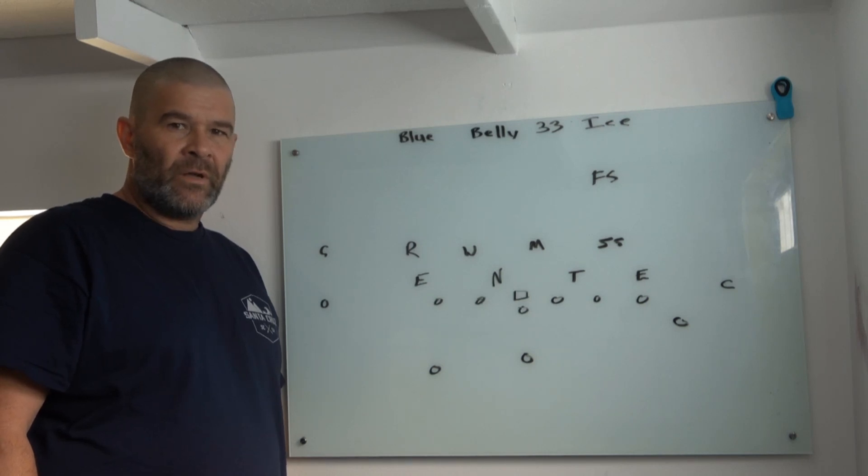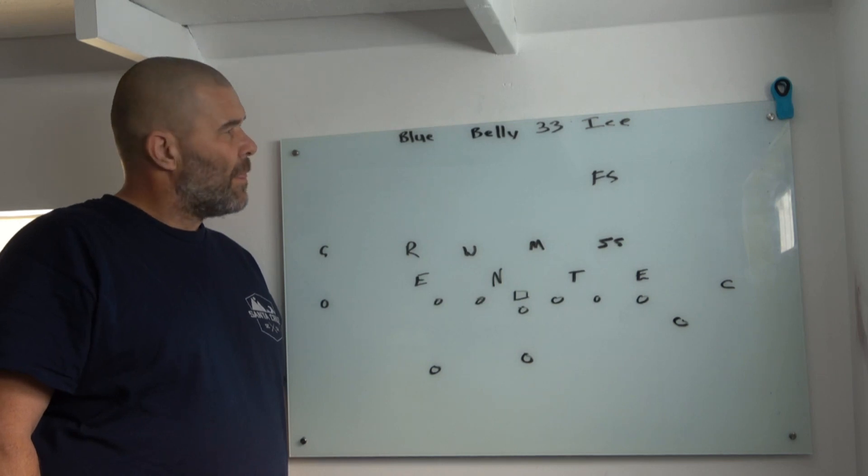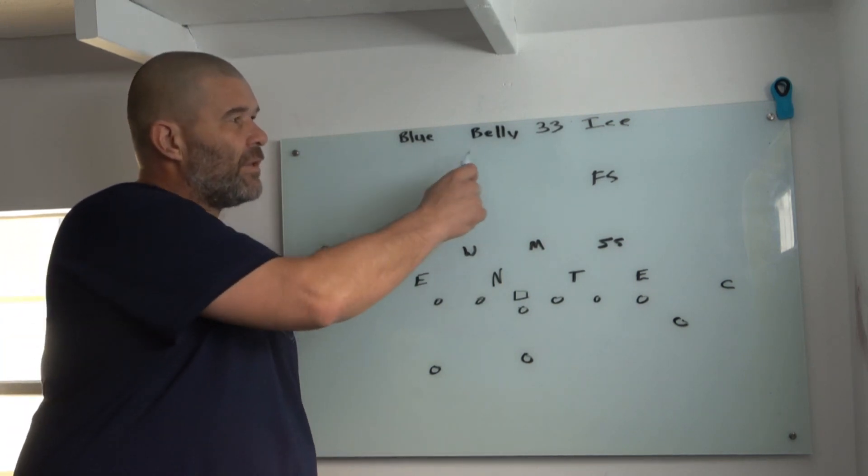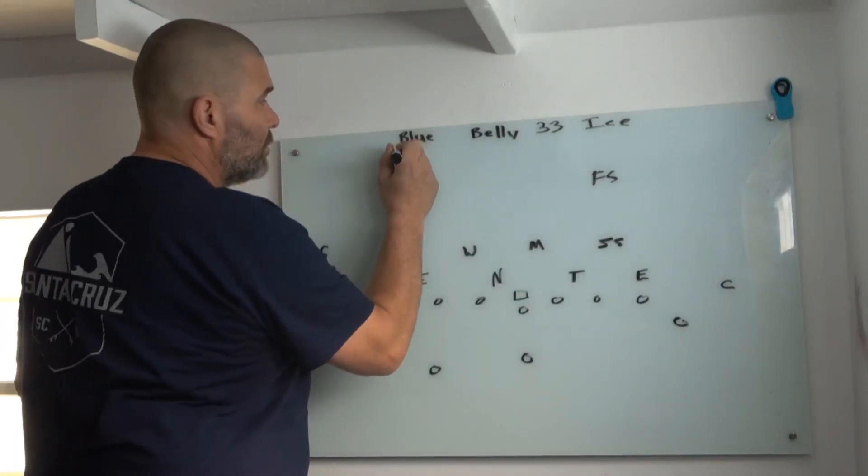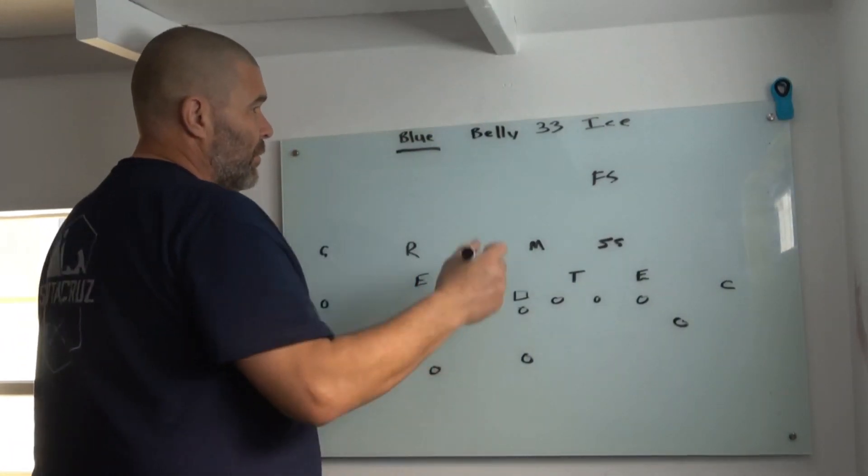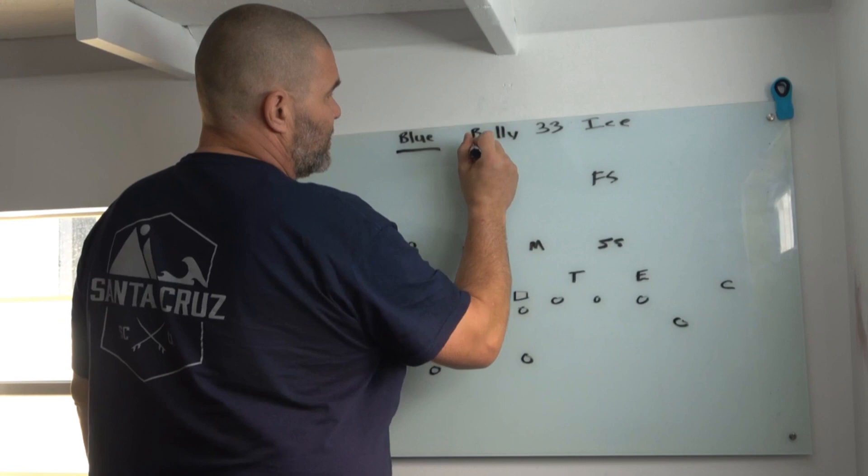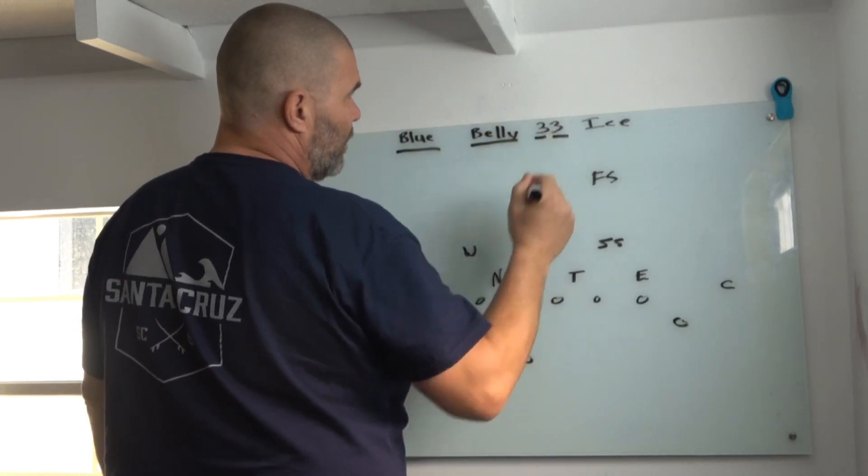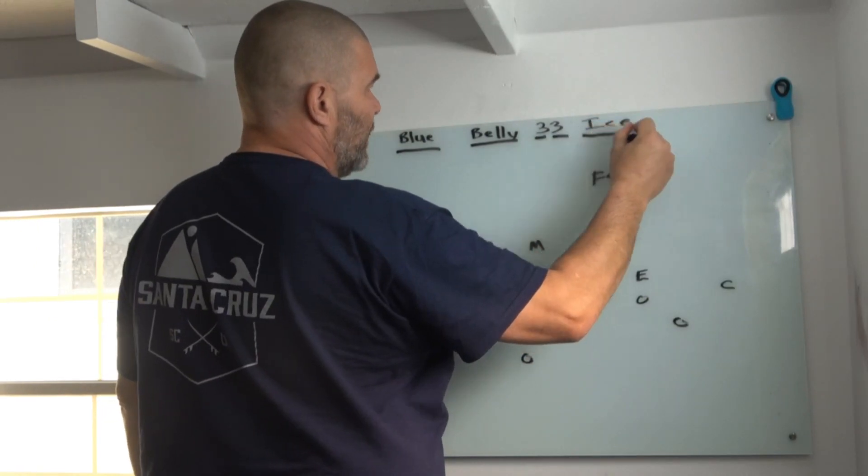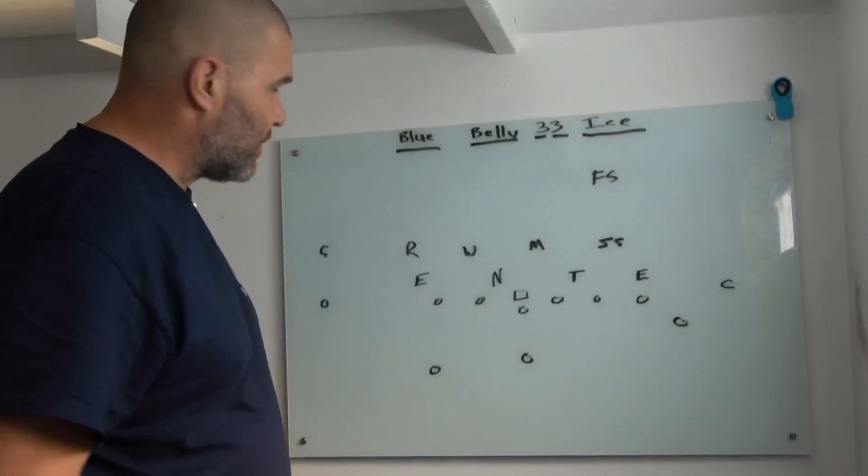Hey guys, Coach John here. I'm going to go over belly iso and I call it blue belly 33 ice. We use blue for motion. Belly is the name of the series. We got our three back going through the three hole and we label it ice instead of iso.